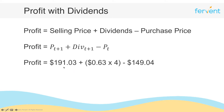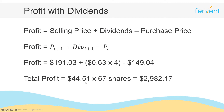Plugging in the numbers: pt+1 is $191.03, dividends are $0.63 per share times four quarters, minus the purchase price of $149.04. This gives a profit of $44.51 per share. Multiplying that by the 67 shares you own gives a total profit of $2,982.17.